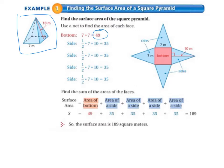And then we need to remember our area of a triangle formula, which is 1 half base times height. So it gives us the height as 10 meters. So 1 half times 7 times 10 equals 35. And there are 4 of those. So we sum up those faces: the bottom plus all of those faces is 49 plus 35, 4 times, and that equals 189. So the surface area is 189 square meters.